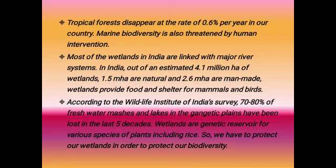Tropical forests disappear at the rate of 0.6% per year in our country. Marine biodiversity is also threatened by human intervention. Most of the wetlands in India are linked with major river systems. Out of an estimated 4.1 million hectares of wetlands, 1.5 million are natural and 2.6 million are man-made, providing food and shelter for mammals and birds. According to the Wildlife Institute of India survey, 70 to 80% of freshwater marshes and lakes in the Gangetic plains have been lost in the last five decades. Wetlands are a genetic reservoir for various species of plants including rice, so we must protect our wetlands.